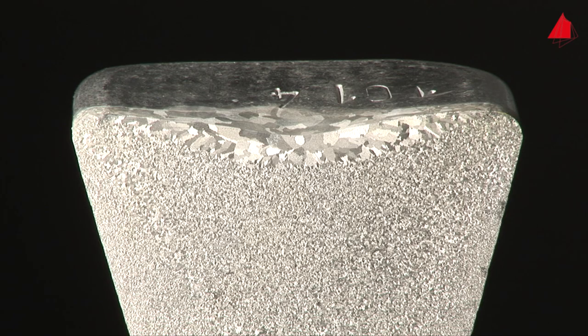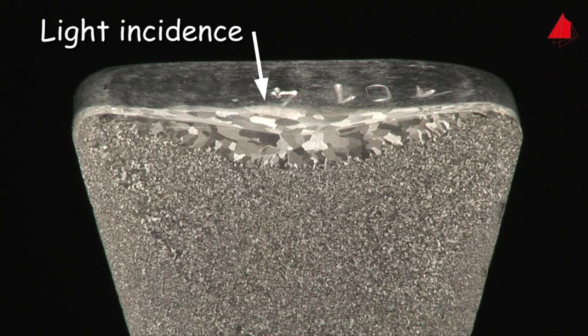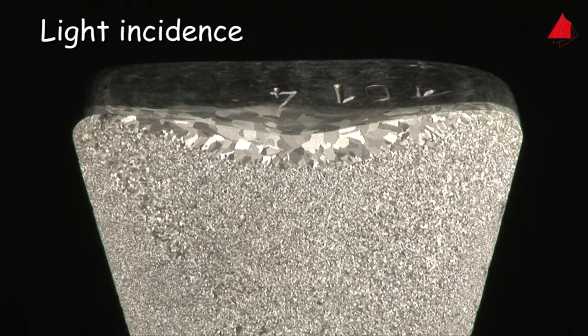But why are the grains only visible after etching? The reason for this is that the etchant structures the material grains on the surface according to their crystal orientation. Experts call it grain contrast etching. At lateral illumination, the individually structured grains reflect the light in different directions and the grains become visible.